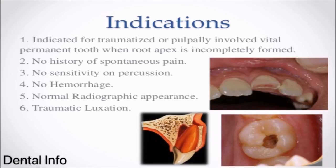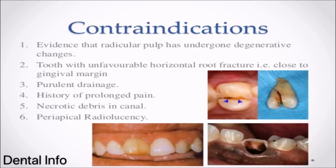Indications for Apexogenesis: 1. Indicated for traumatized or pulpally involved vital permanent tooth when root apex is incompletely formed. 2. No history of spontaneous pain. 3. No sensitivity on percussion. 4. No hemorrhage. 5. Normal radiographic appearance. 6. Traumatic luxation.